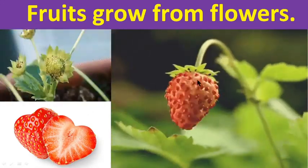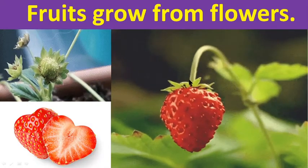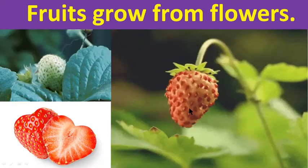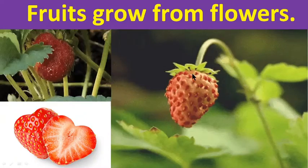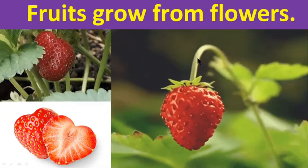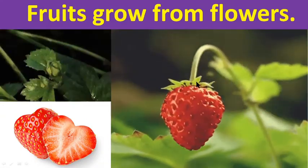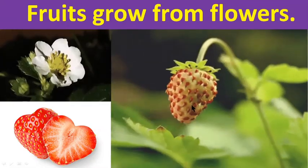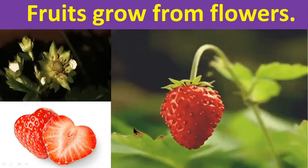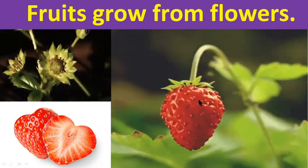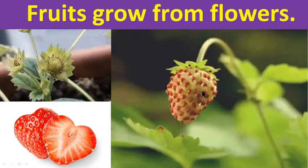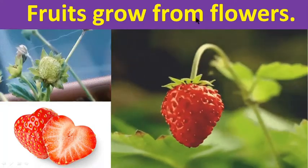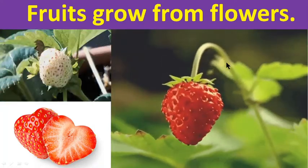This is flowers, and this flower is turning into fruit. This is the flower of a strawberry, and it is turning into the fruit — strawberry. We can get fruit from flowers, or fruit grows from flowers.